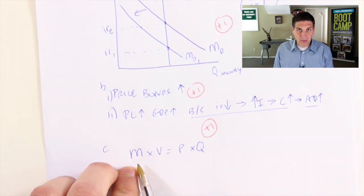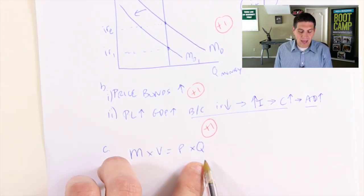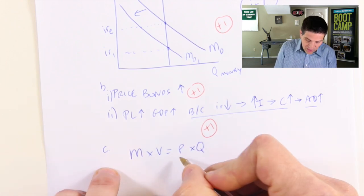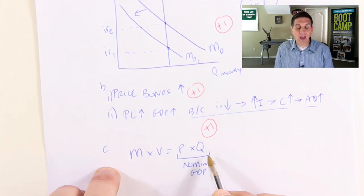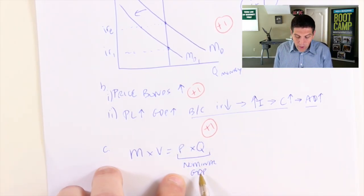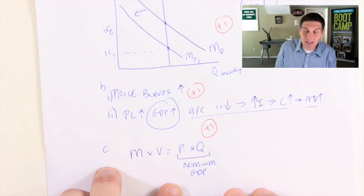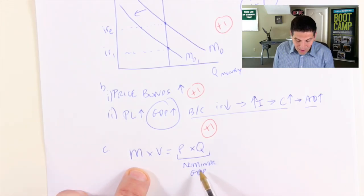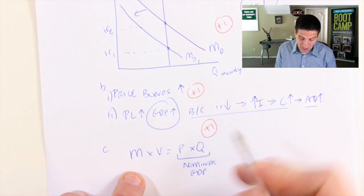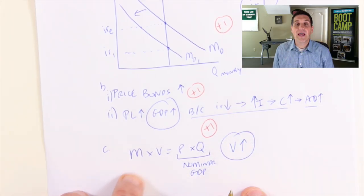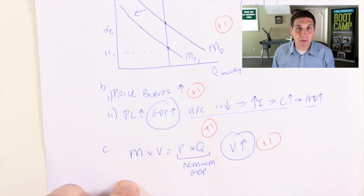The amount of money times velocity—how many times it's spent and re-spent—equals the price of goods and services times quantity produced. These numbers together equal nominal GDP. Price times quantity equals nominal GDP. We already know what happened to nominal GDP—it went up. We said aggregate demand and GDP went up. If GDP is going up and the money supply is constant, then velocity must increase. The velocity of money increases, earning you one more point in part C. No explanation required.